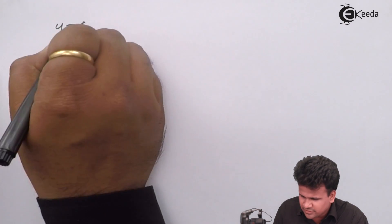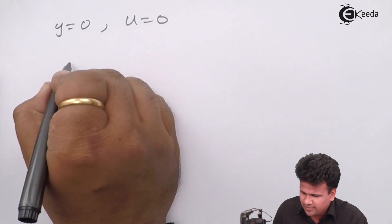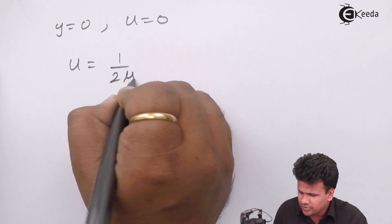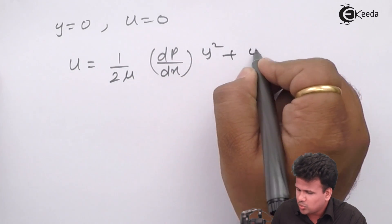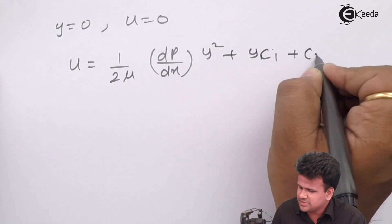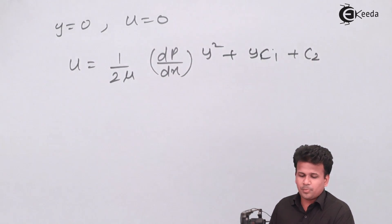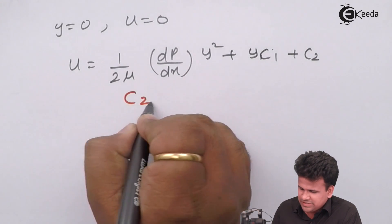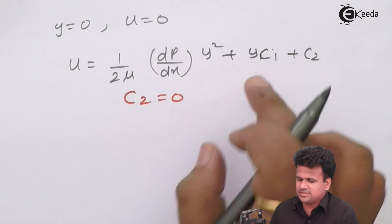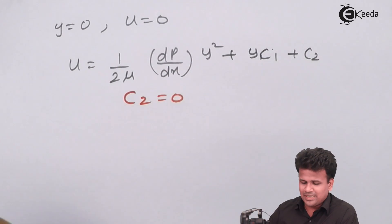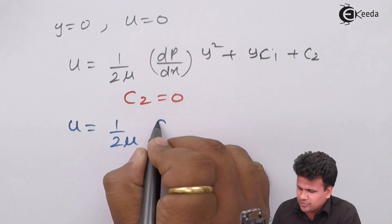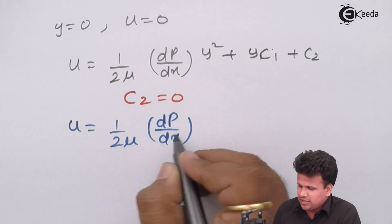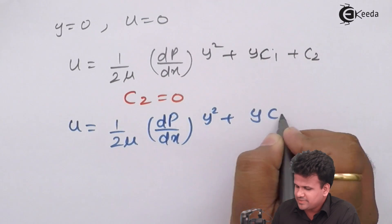The first boundary condition is y = 0, u = 0. Substituting into u = (1/2μ)(dp/dx)·y² + y·c₁ + c₂: all three terms containing y and u become 0, giving us c₂ = 0. The equation then becomes u = (1/2μ)(dp/dx)·y² + y·c₁.